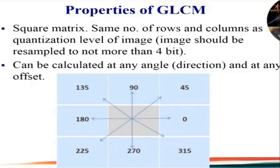Because if it is greater than 4 bits then the calculation becomes tedious. The GLCM can be calculated at any angle and at any offset. We can calculate neighboring pixels at 0 degrees, 45, 90, 135, 180, 225, 270, and 315 degrees. Usually the co-occurrence matrix is calculated in the horizontal direction, that is 0 degrees.